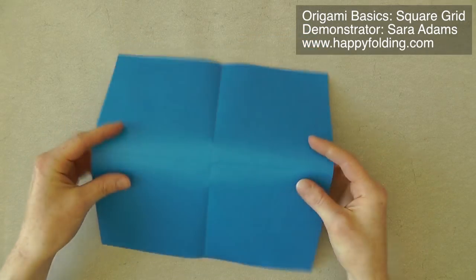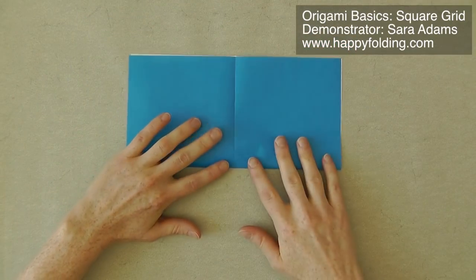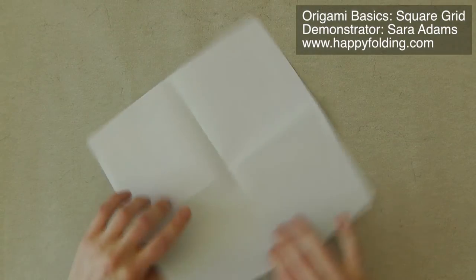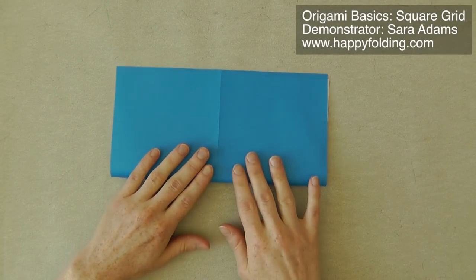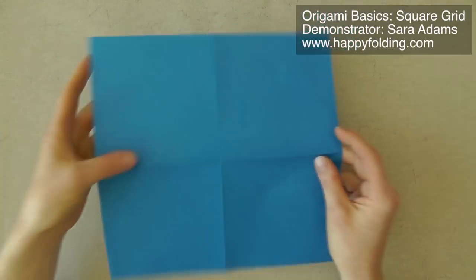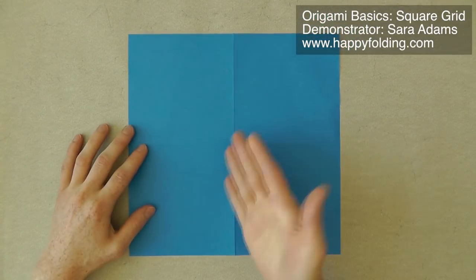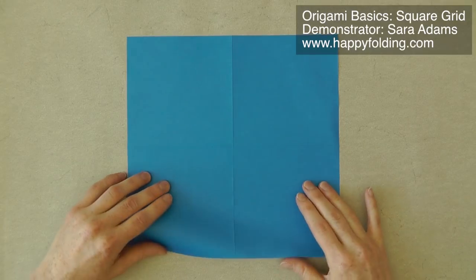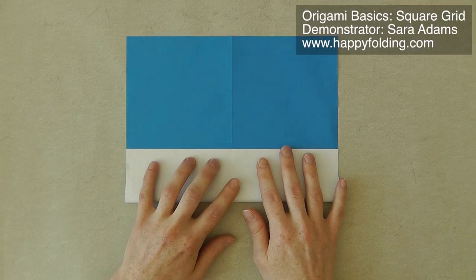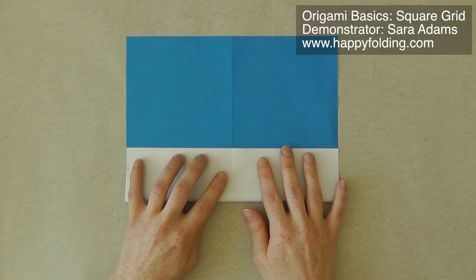Now we're going to always reverse the folds. So after we've folded it valley fold, we're also going to make a mountain fold, seen from the color side. And like that, the crease is a bit stronger and it also has less of a direction. But the first crease you make is always the most important one.